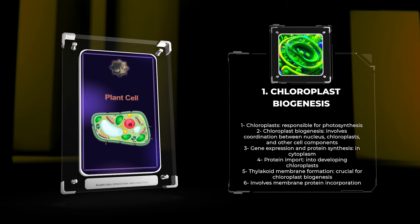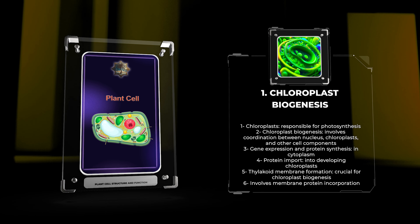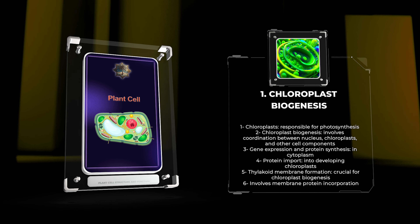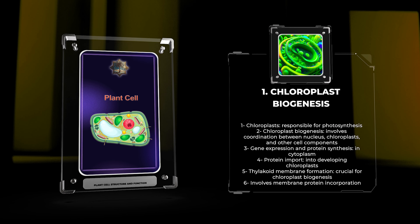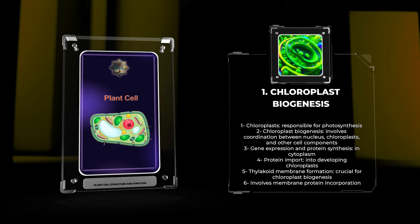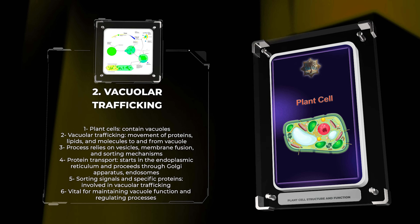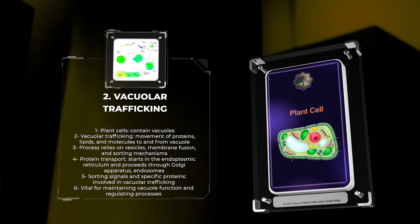Chloroplasts are organelles in plant cells responsible for photosynthesis. Chloroplast biogenesis involves coordination between the nucleus, chloroplasts, and other cell components. It begins with gene expression and protein synthesis in the cytoplasm, followed by protein import into developing chloroplasts. Thylakoid membrane formation is crucial for chloroplast biogenesis and involves membrane protein incorporation and lipid synthesis. Overall, chloroplast biogenesis is a complex process ensuring functional chloroplast formation.